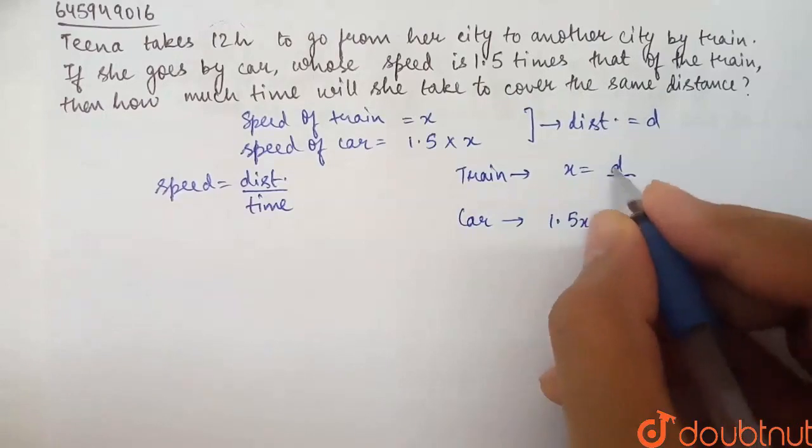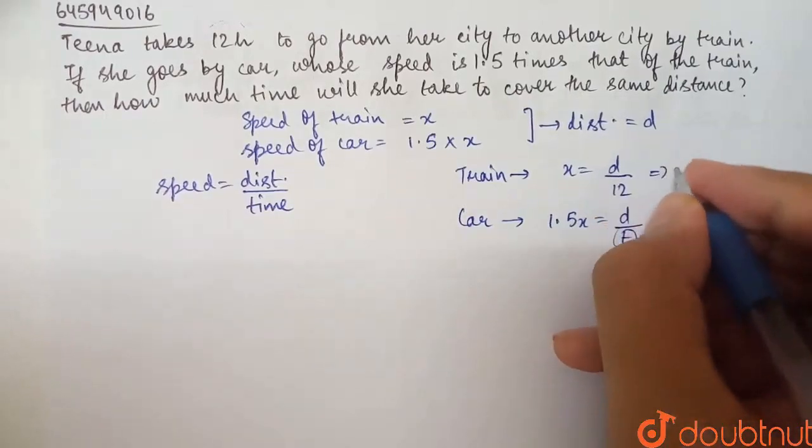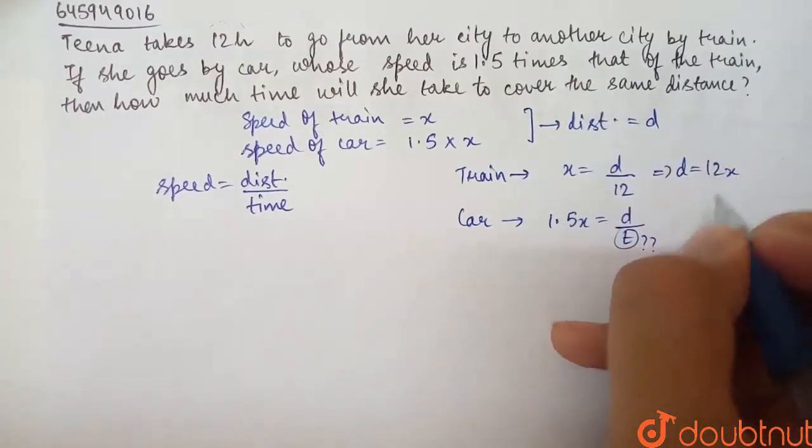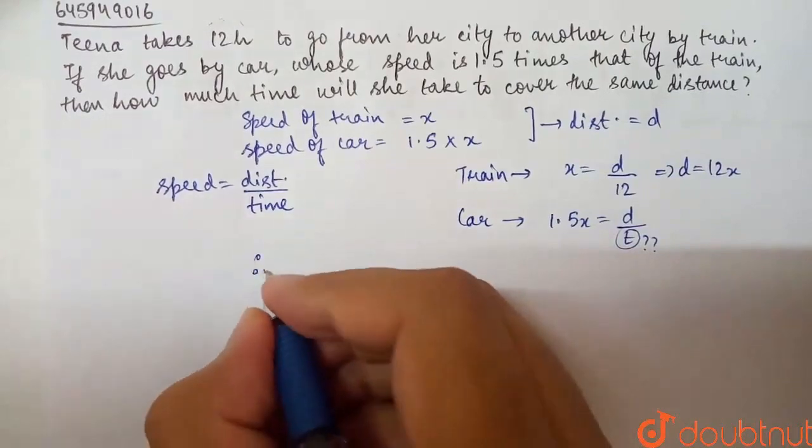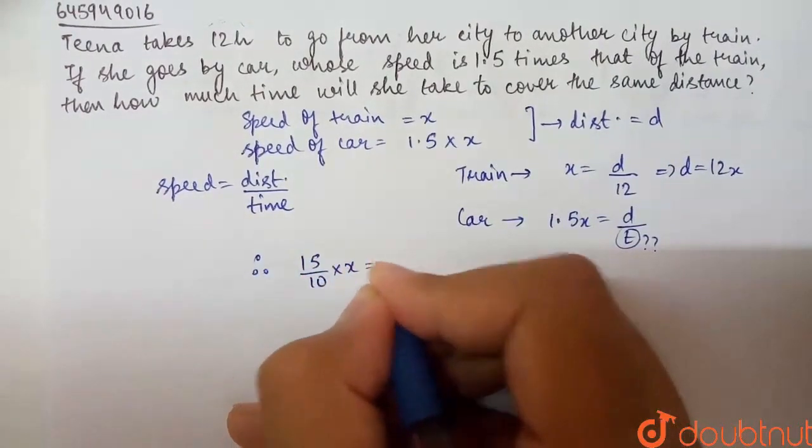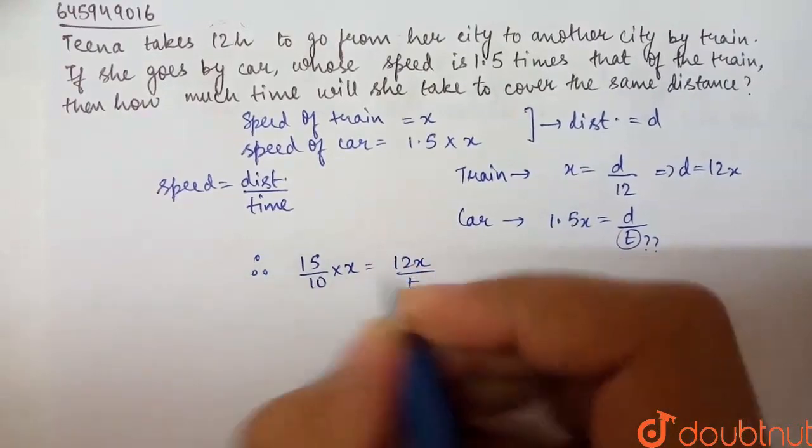So from here, I can take the value of D. D will be 12X. And here I can substitute D. Therefore, 1.5X equals 12X by T, or 15 by 10 times X equals 12X by T.